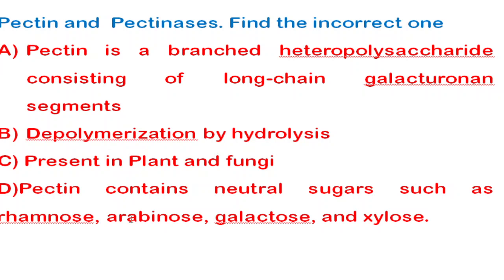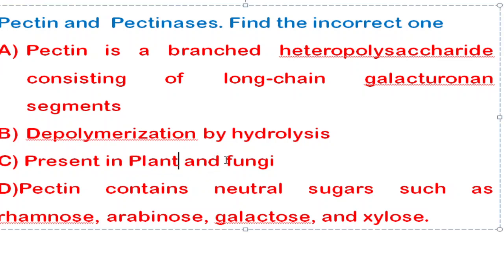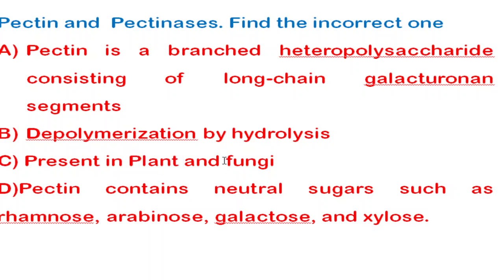The next question concerns pectin and pectinase — find the incorrect statement. Pectin is a branched heteropolysaccharide consisting of long-chain galactan segments — this is correct. Pectinase depolymerizes pectin by hydrolysis — also correct. Pectin is present in plants; pectinolytic enzymes are present in fungi — correct. The incorrect option involves whether pectin contains neutral sugars like rhamnose, arabinose, galactose, and xylose. If the option states 'natural' instead of 'neutral' sugar, that would be the incorrect statement.